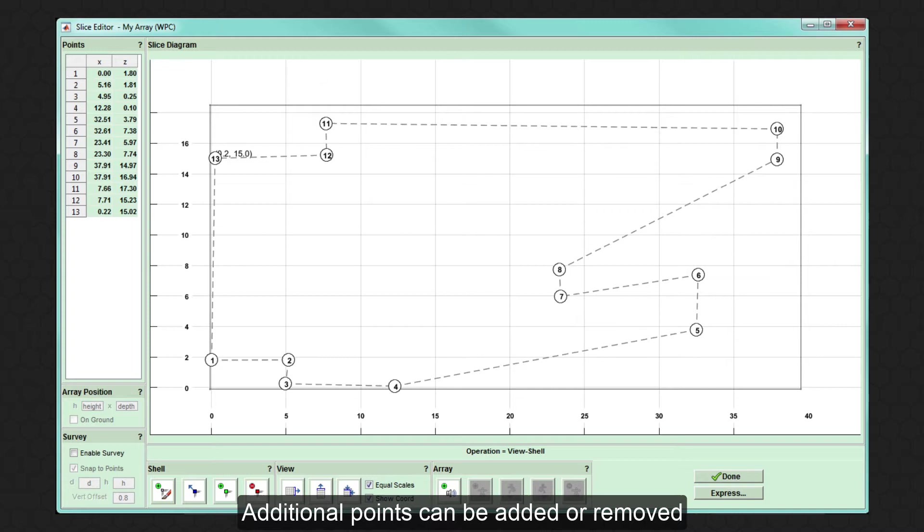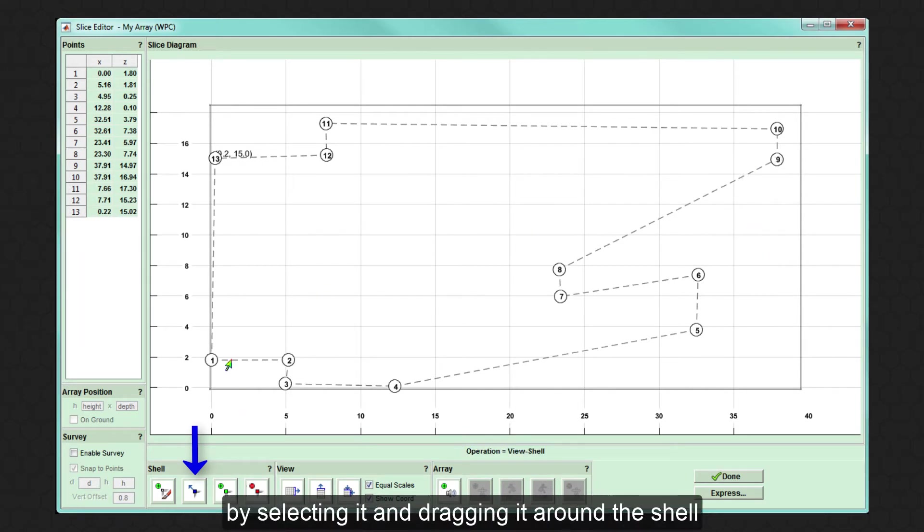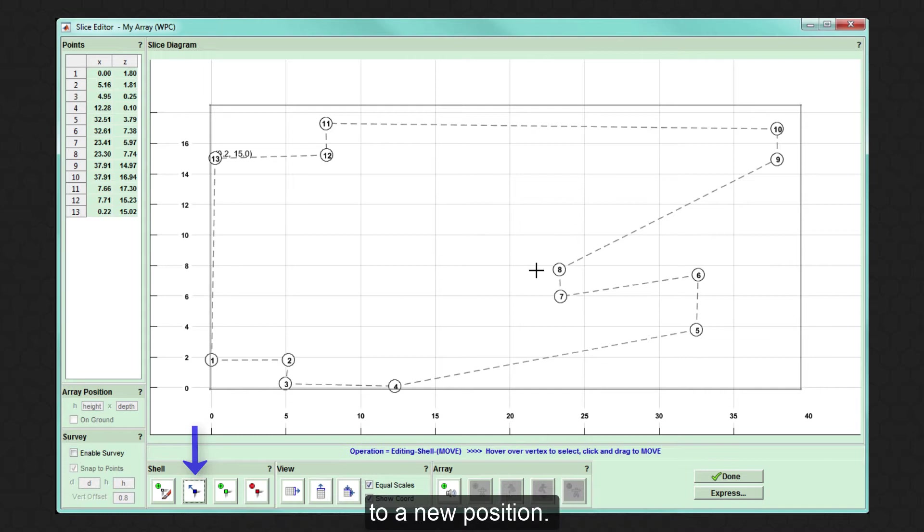Additional points can be added or removed at any time if necessary by selecting the appropriate button. Green for add, red for subtract. The blue button allows the user to manually move a point by selecting it and dragging it around the shell to a new position. Once drawn, the workspace automatically zooms to best fit for the shell.